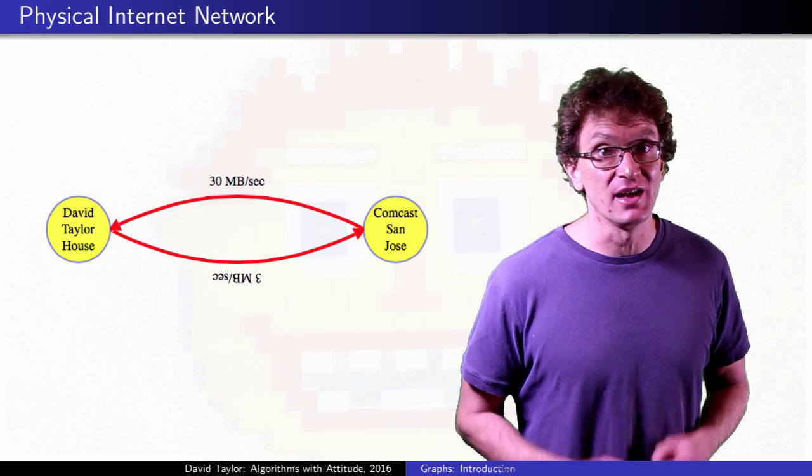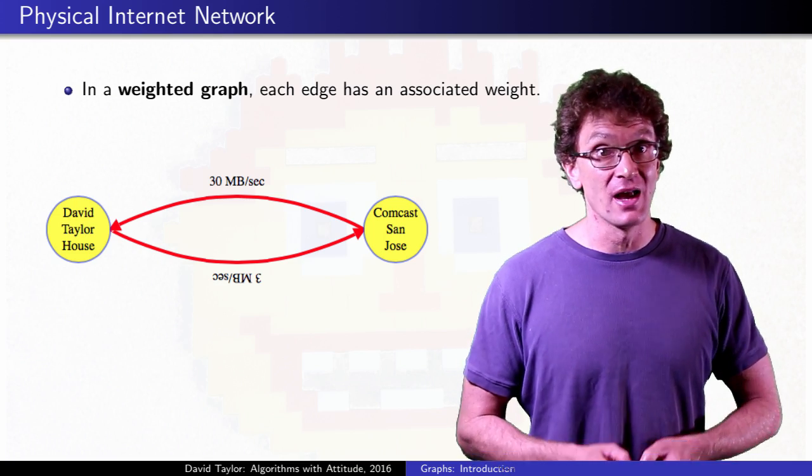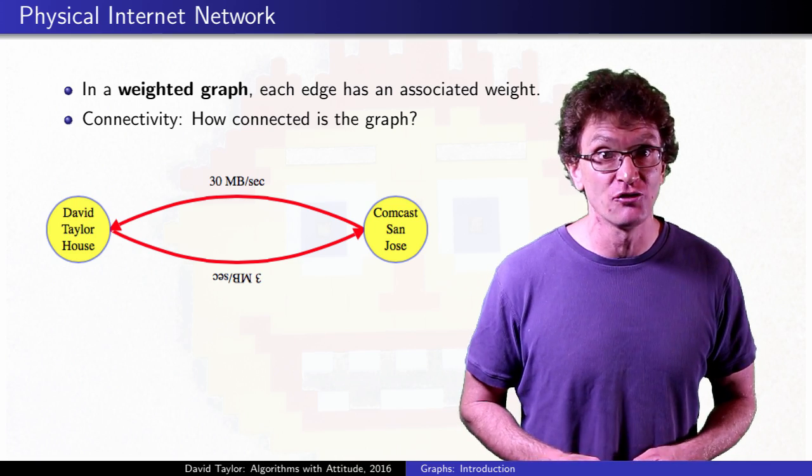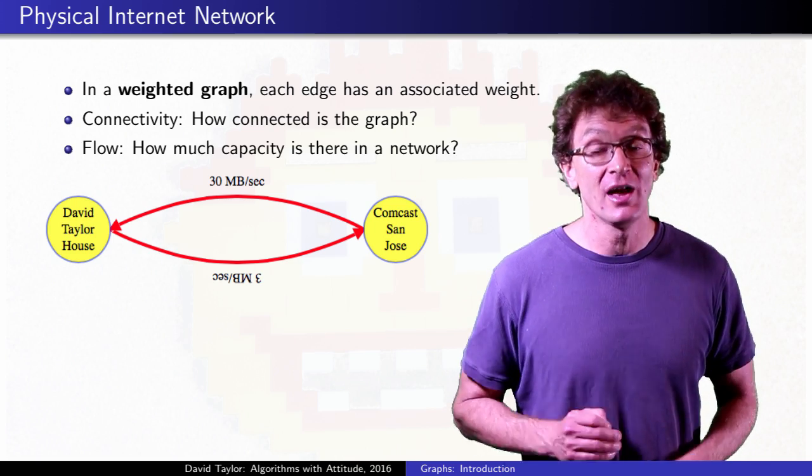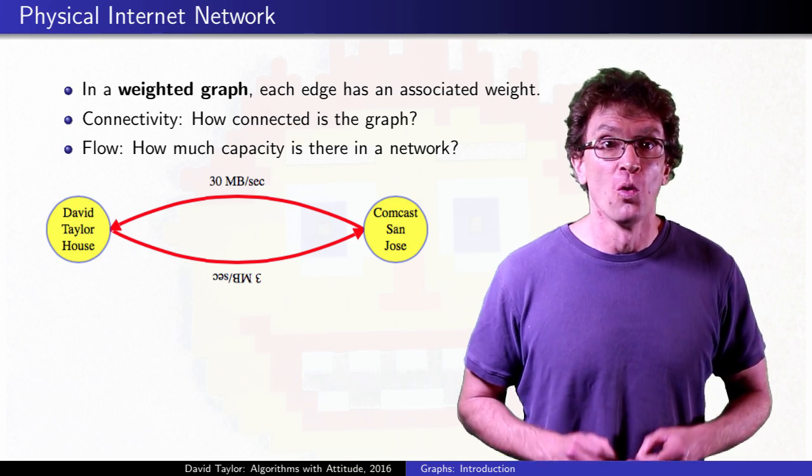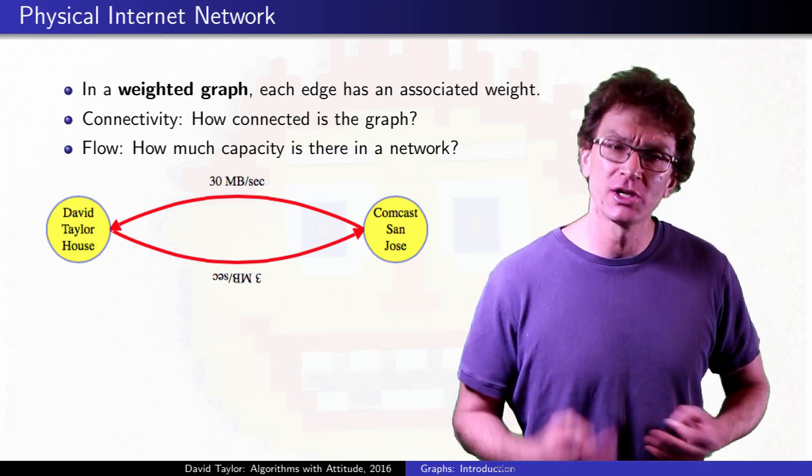We store that data with the edge and call it a weighted graph. Want to figure out where to lay your next cable for more robust connectivity, or to maximize data flow between two locations? That's a connectivity or flow problem. In weighted graphs, what the weight means is completely dependent on what you're modeling.